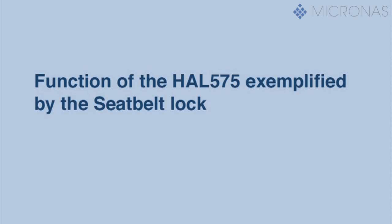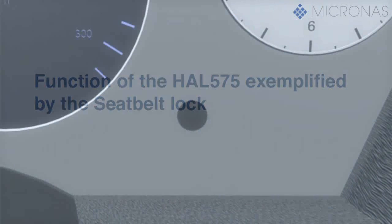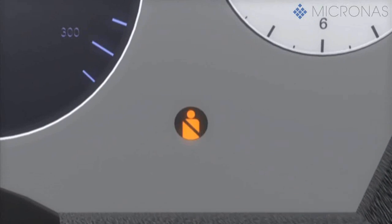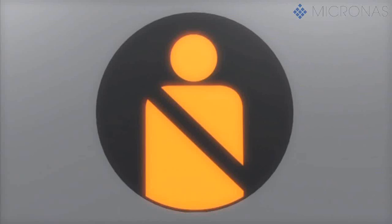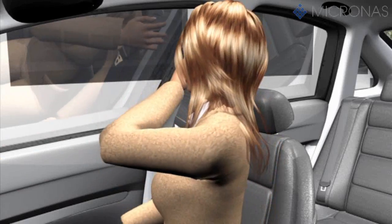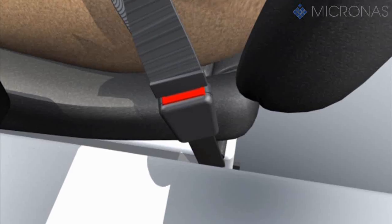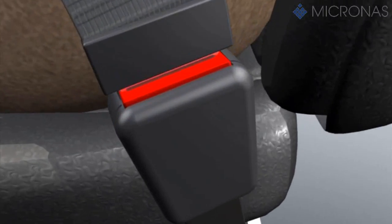An important function in general airbag control today is to identify whether a passenger is strapped in the seat belt or not. A warning message on the dashboard indicating whether the driver wears a seat belt or not is a requirement for obtaining the 5-star NCAP rating. In this application...